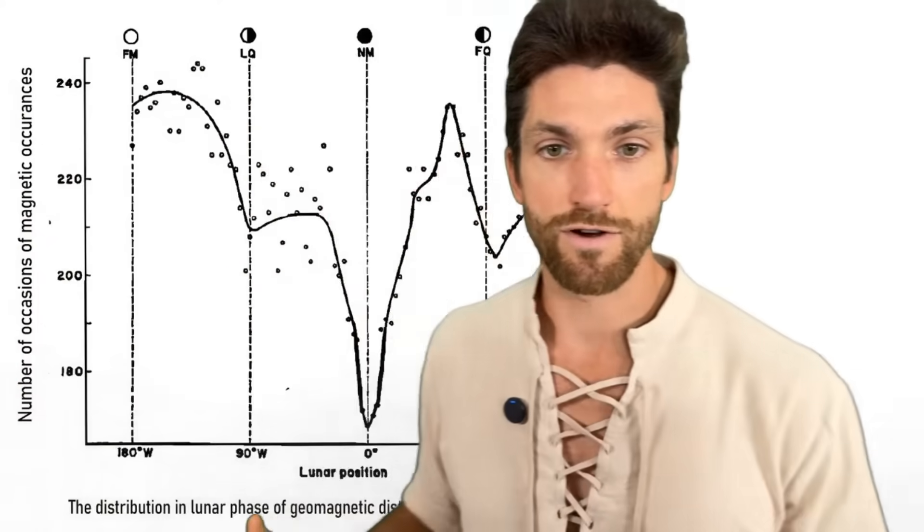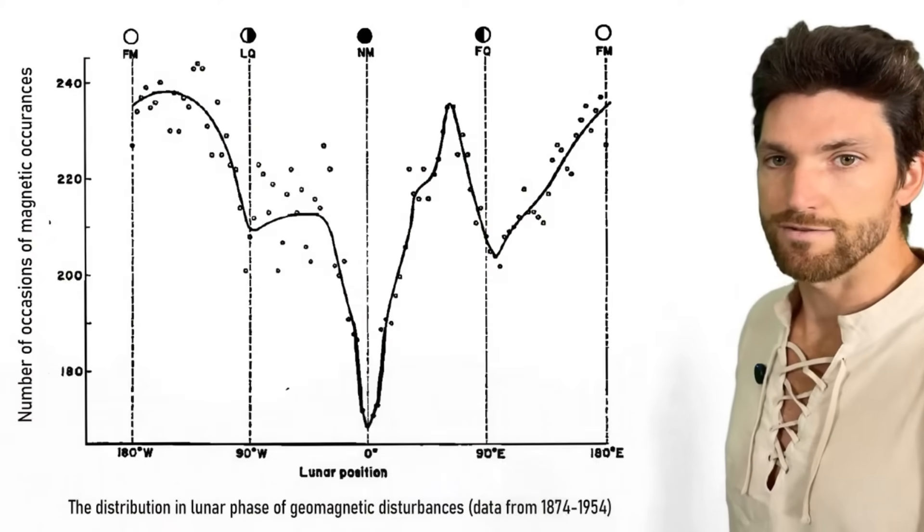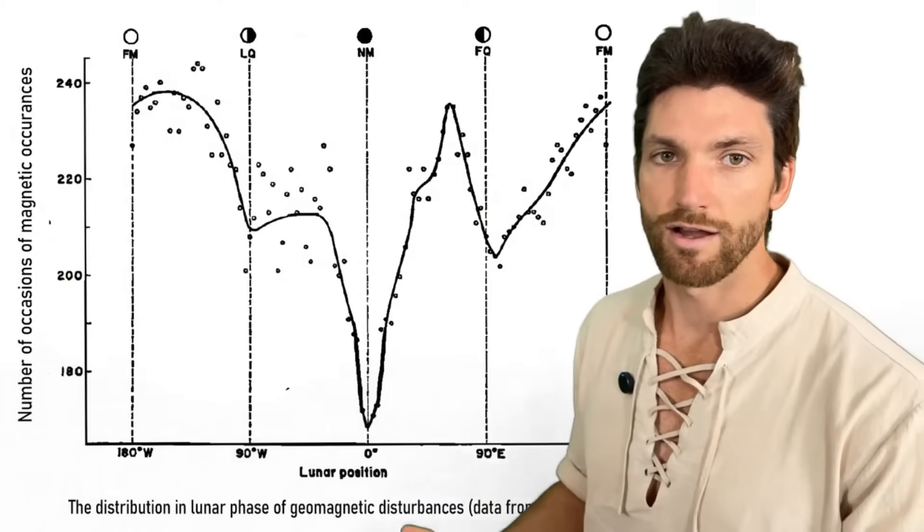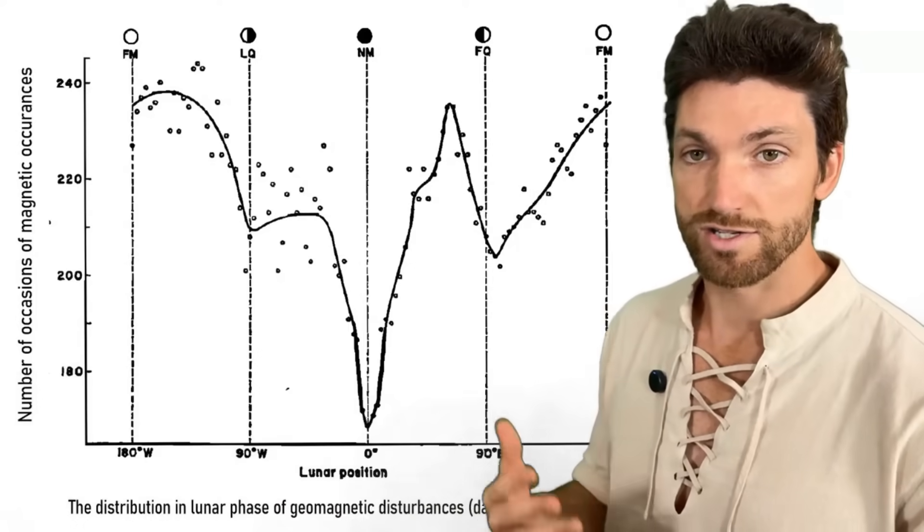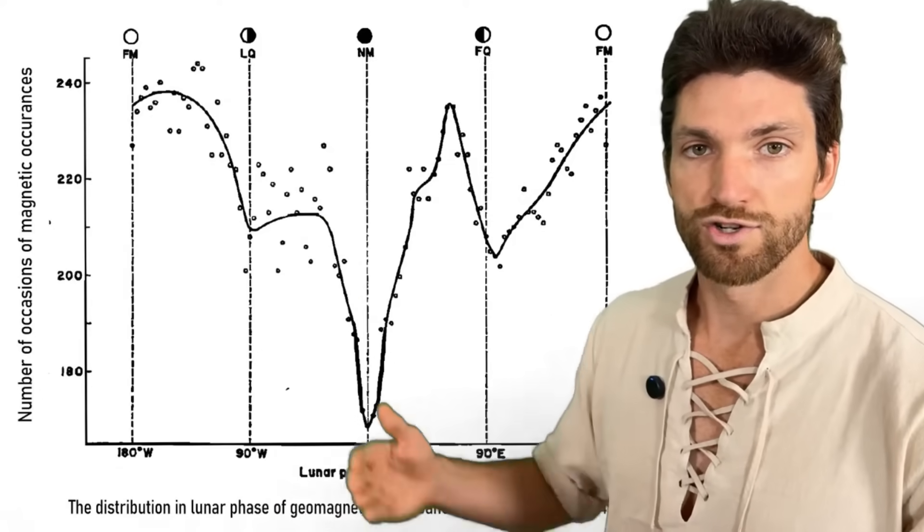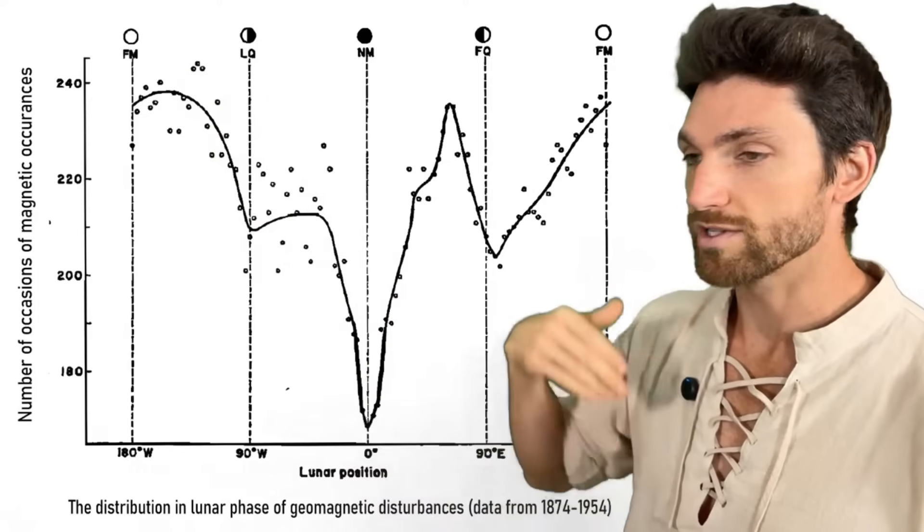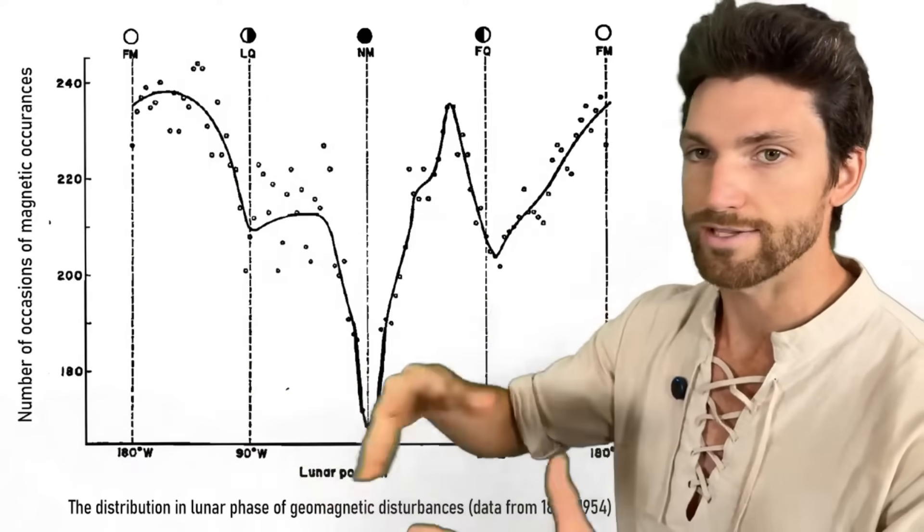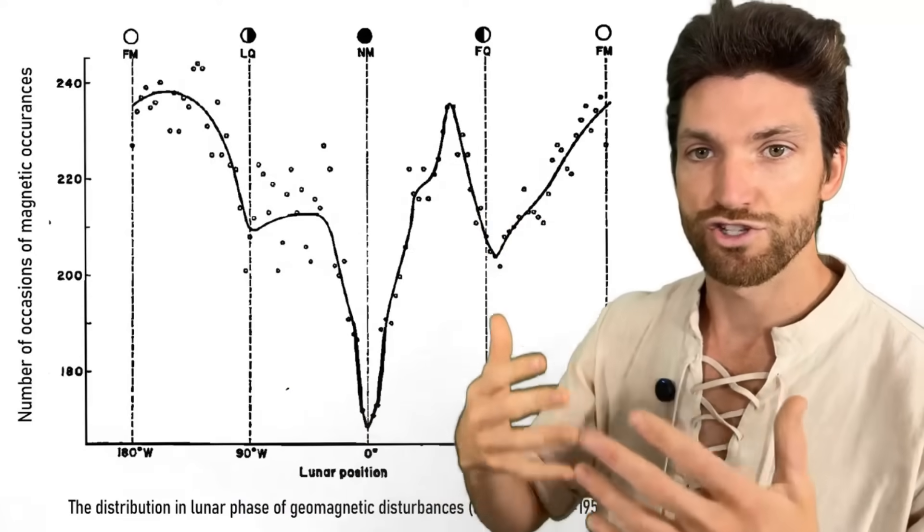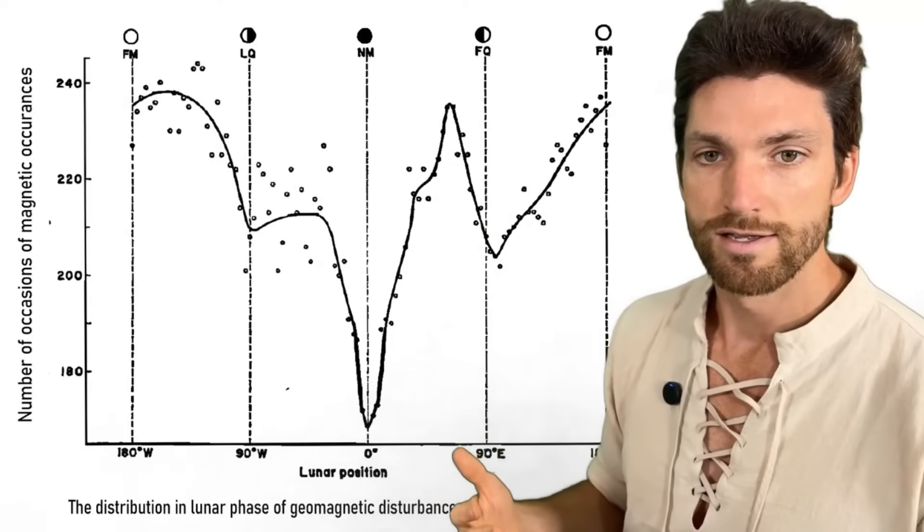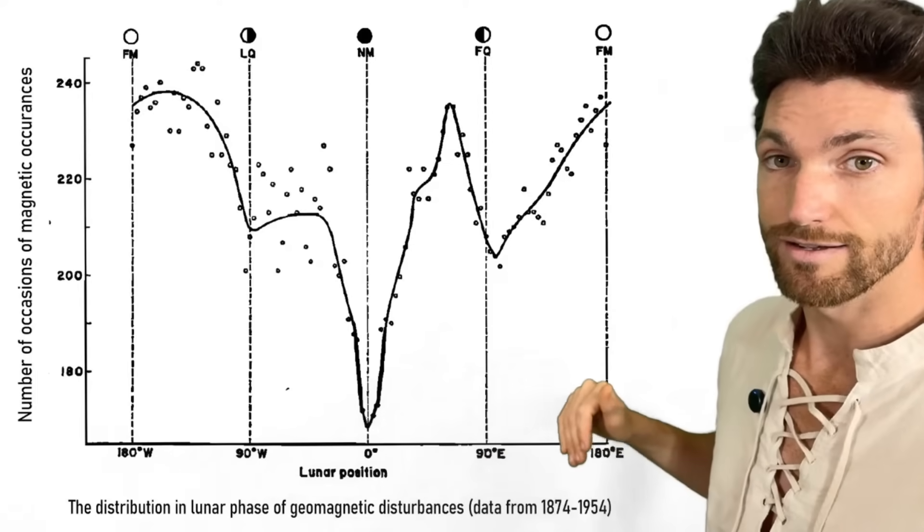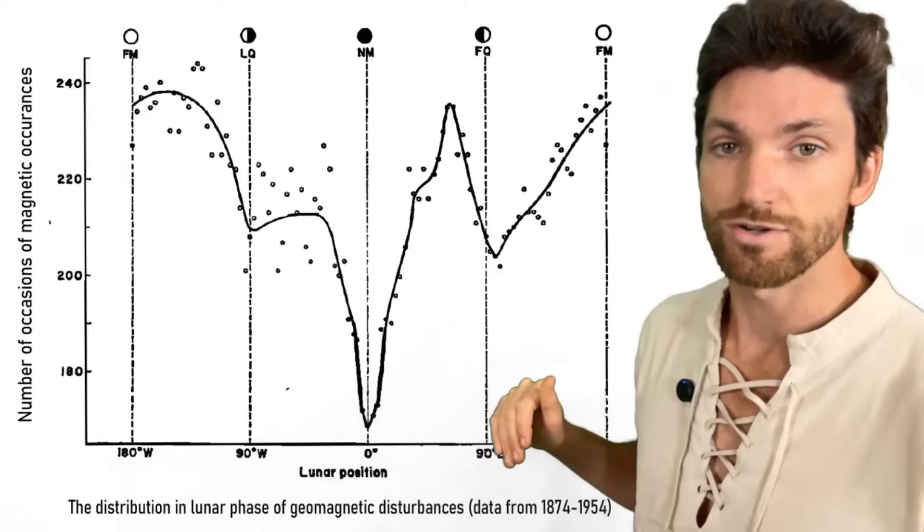But we also have this data from 1874 to 1954 showing that geomagnetic disturbances are just in general more common during that full moon phase. And they're least common during the new moon when the moon is completely out of the magnetic field, totally out. It's actually kind of in front of the earth shielding it from solar wind. So this is 80 years of data, definitely worth paying attention to as a result.